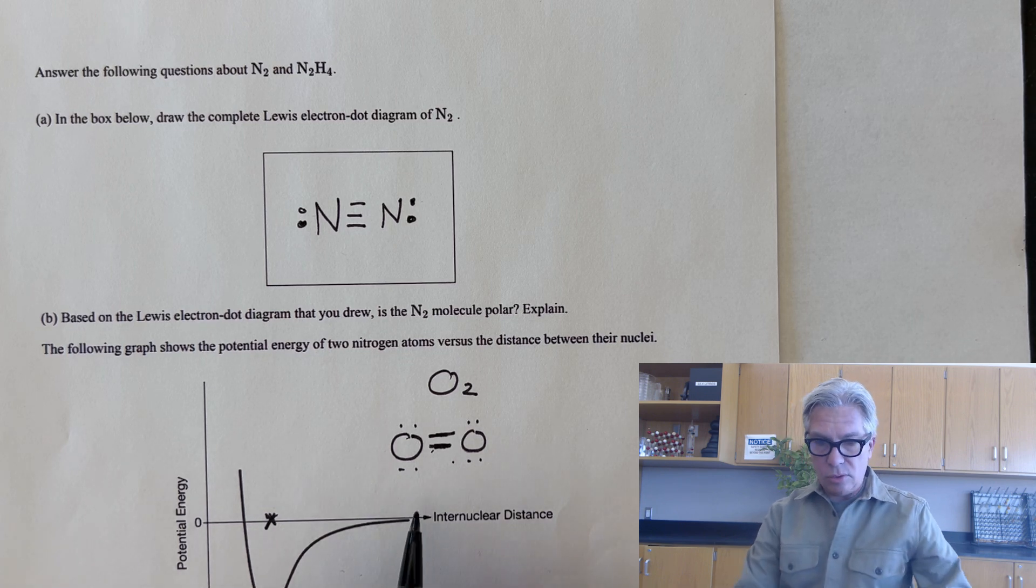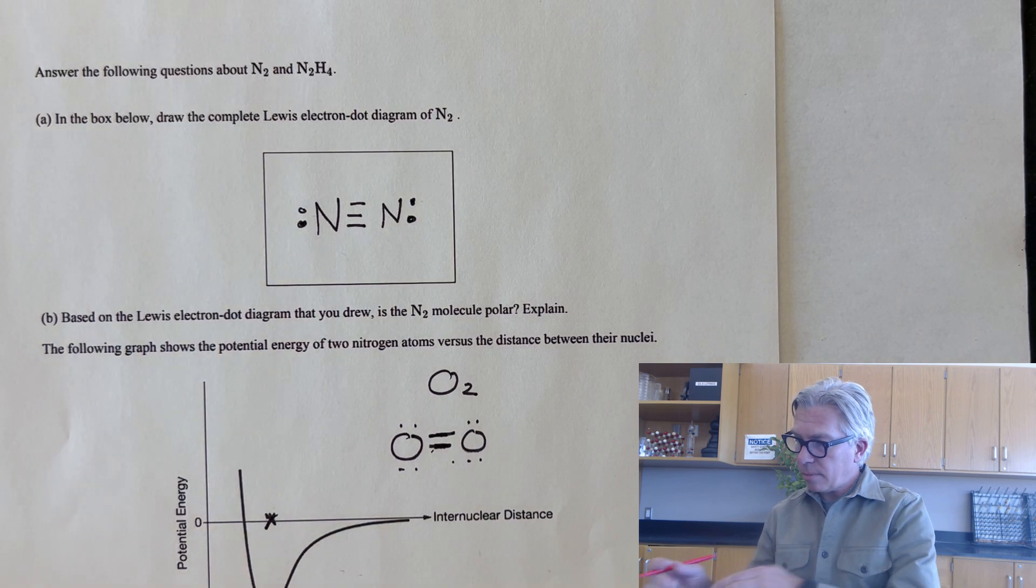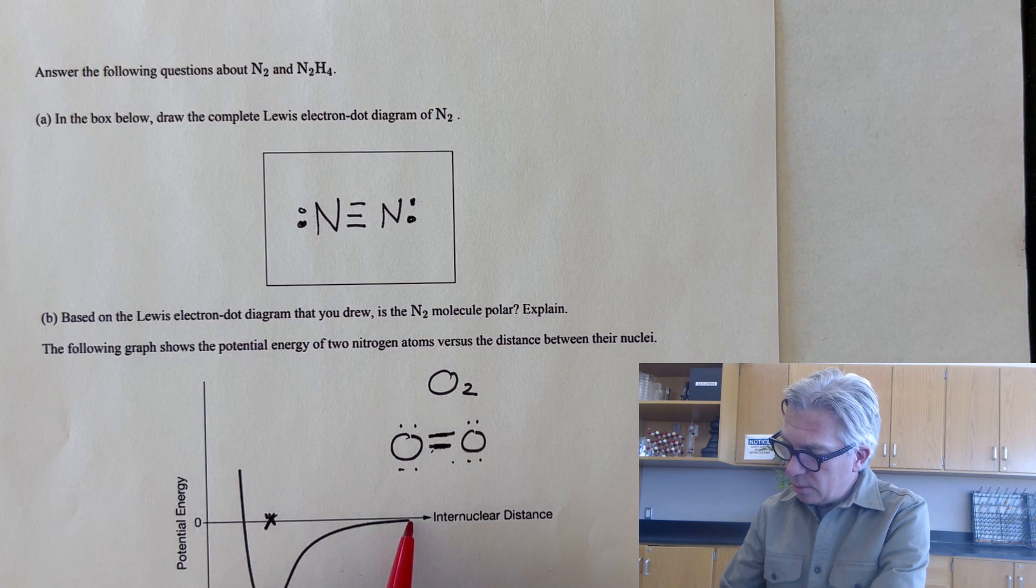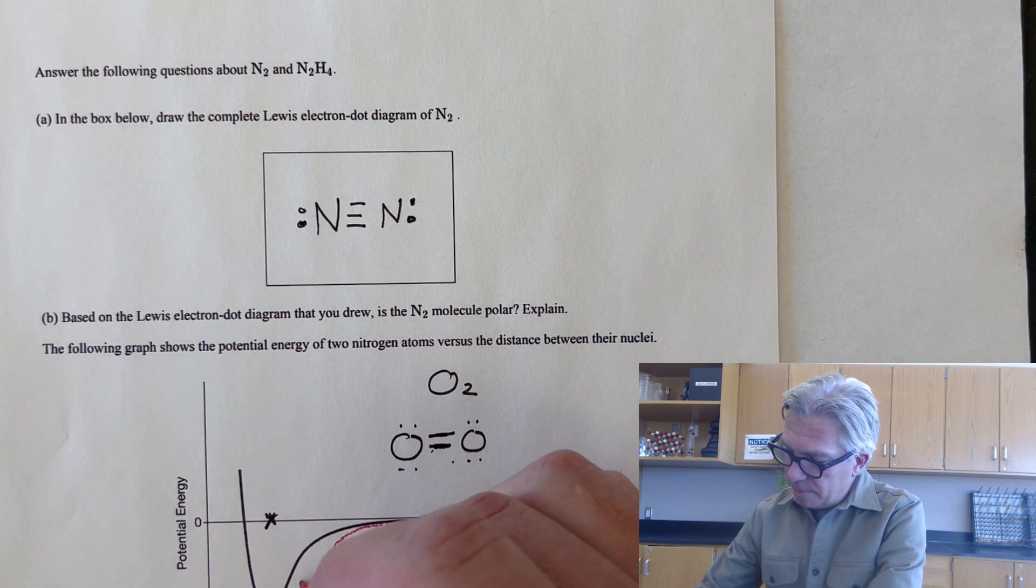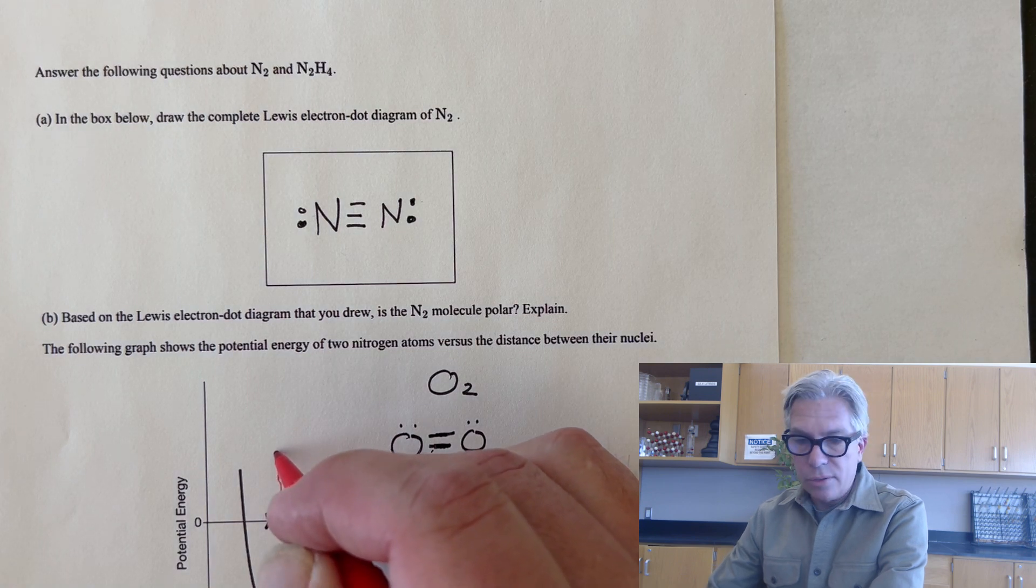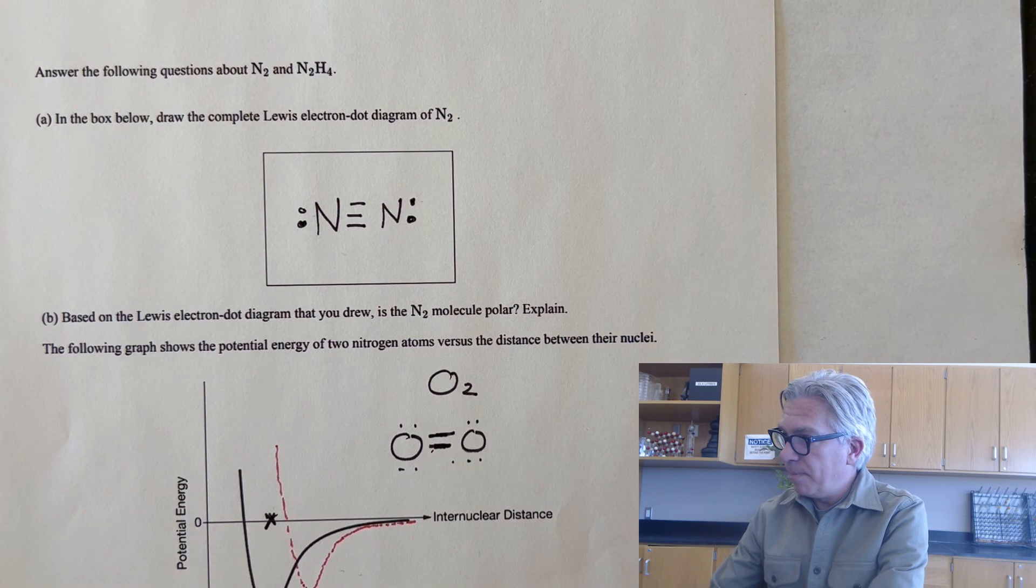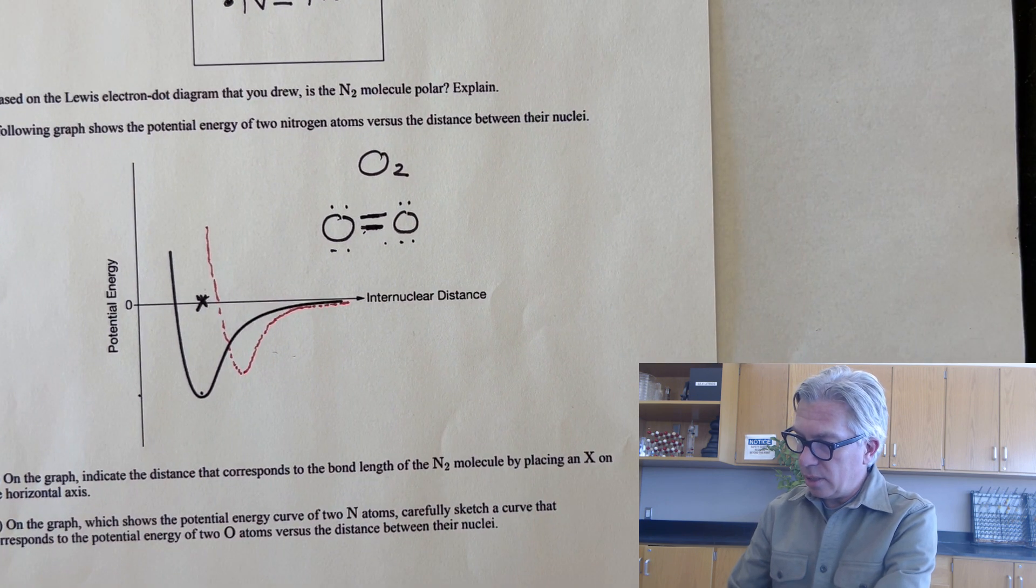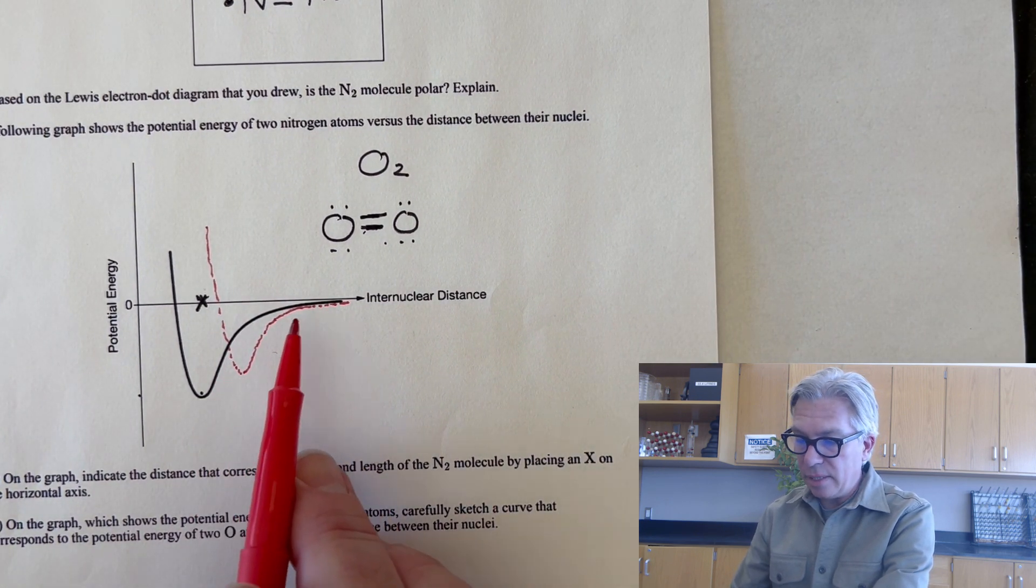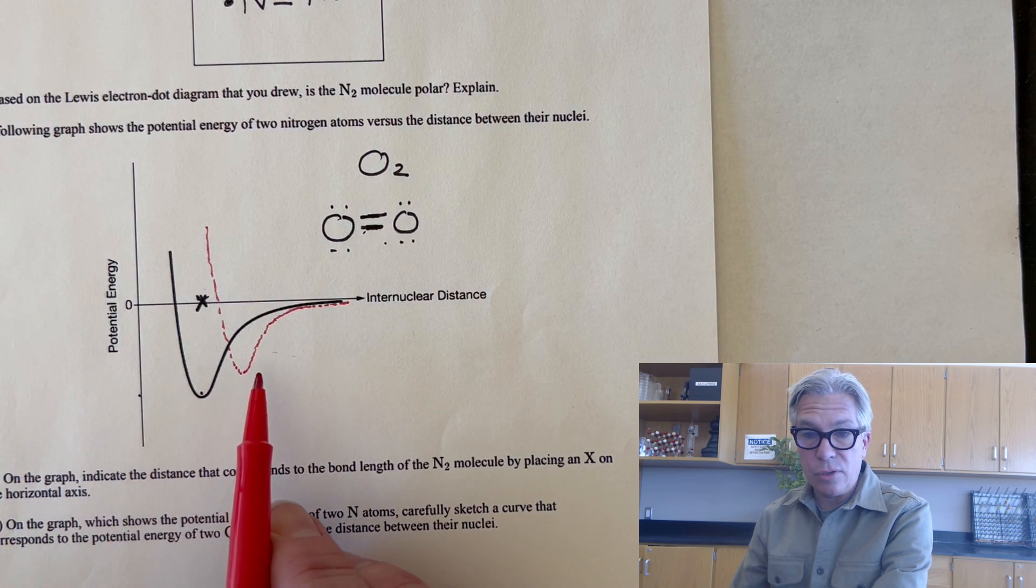So I'm going to change colors here. If I'm sketching this one, there's no one correct answer, but you do have to have the minimum being higher up than nitrogen and farther to the right than the nitrogen. Let's get that up on the screen there. So that's what our sketch would look like. You would get a point for having this higher and a point for having it farther to the right.